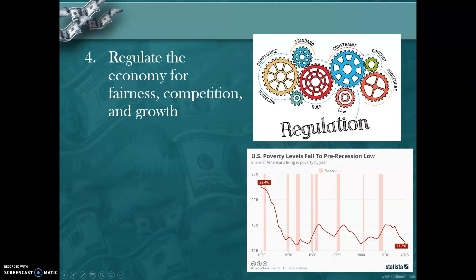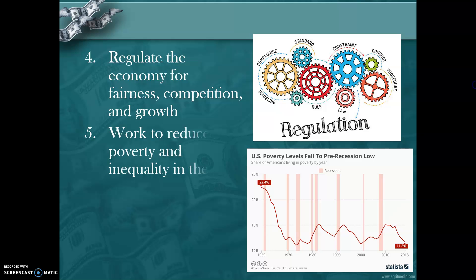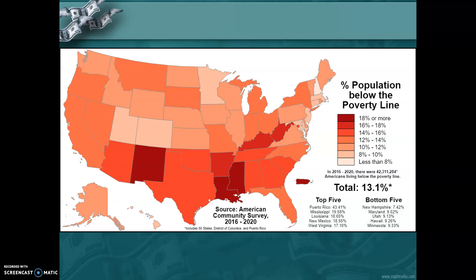Another way government regulates is through fairness and competition — laws and agencies put into place to make sure businesses have a fair playing field. We also have to consider individuals and the effort to reduce poverty and inequality in the U.S. About 13% of Americans live at or below the poverty line — you're talking about 42 million people. Nevada is right around 13%, about the national average.